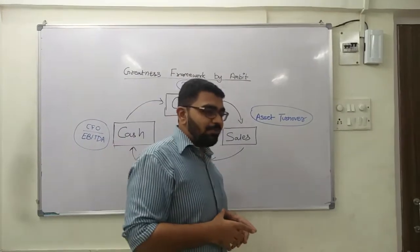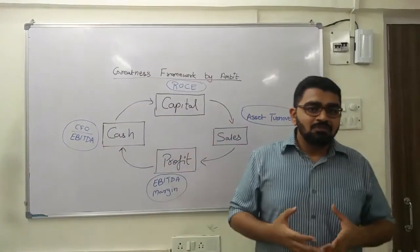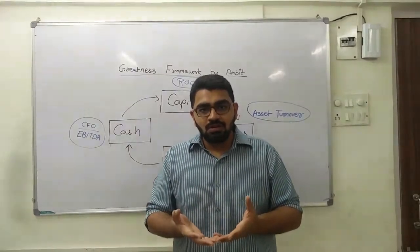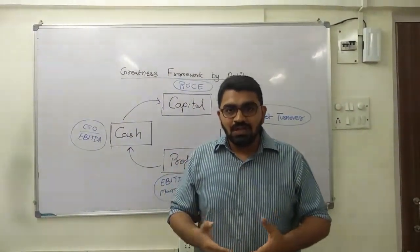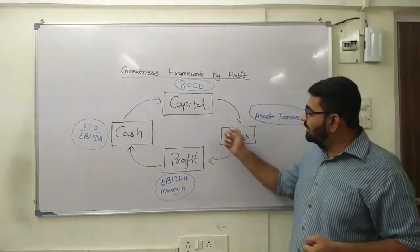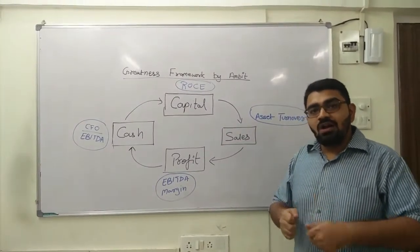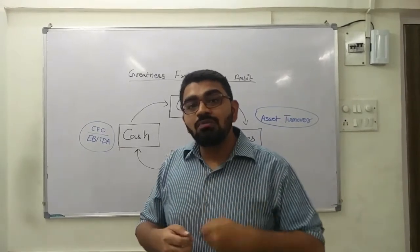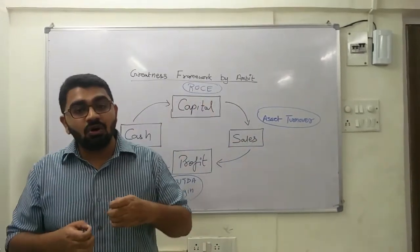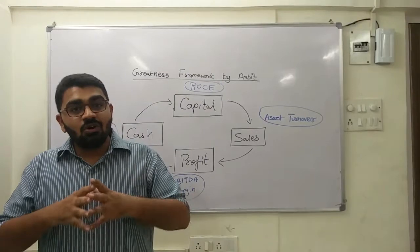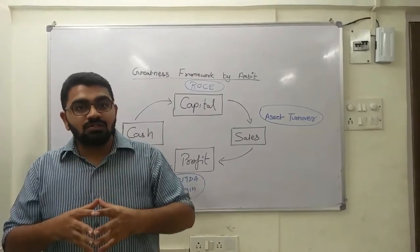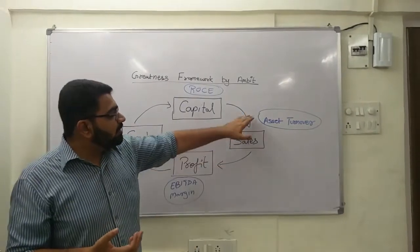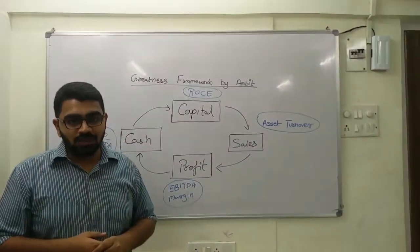So that is the first phase for any business. Once you have invested this capital, what do you expect? You expect people will come and buy these goods from your shop — your capital will get converted into sales. Now, a good business will convert more and more capital into sales, or the velocity of conversion from capital to sales will be higher. How do you measure this velocity? You measure it by the asset turnover ratio.